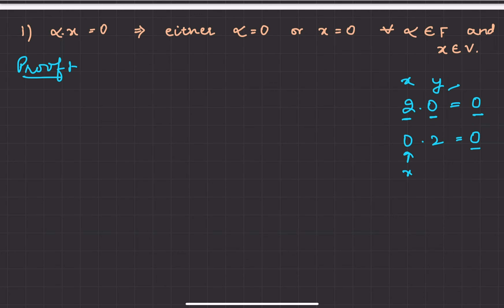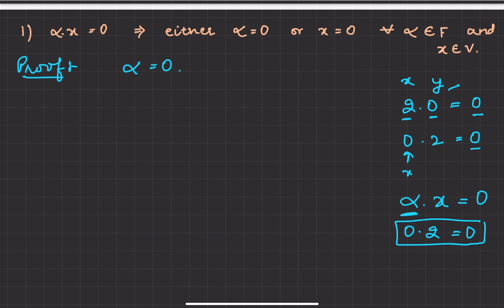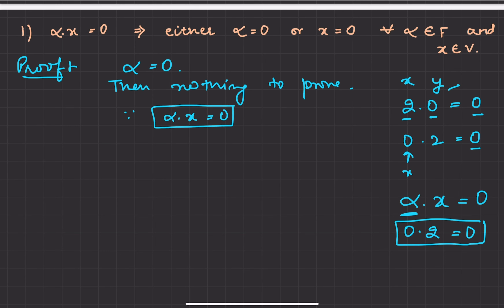For the proof, firstly, if alpha equals 0, then alpha·x equals 0 — nothing to prove, right? Because if the first element alpha is 0, doing 0 times anything gives 0. So we have shown that when alpha equals 0, alpha·x equals 0.